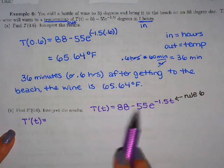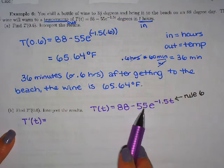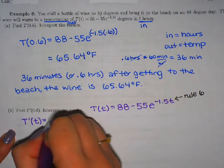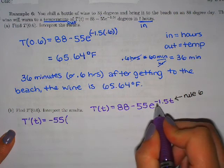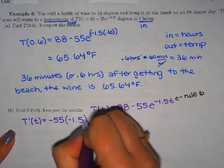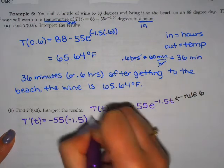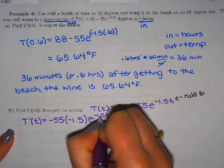So first of all what's the derivative of 88? That's a constant. The derivative is 0. And then I have this constant multiple here. It's not a product rule because there's not two t's multiplied. So I'm going to just keep the constant multiple negative 55. And then take the derivative of my power. Derivative of negative 1.5t is just negative 1.5. Derivative of your power times e to the original power.